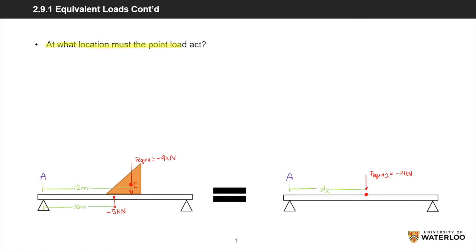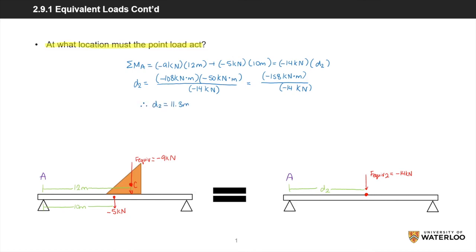Finally, we calculate the location at which the combined point load must act. Using conservation of momentum — a balance of moments equation — we add the moment produced by the DL about point A, which is negative 9 kN times 12 meters, with the moment produced by the beam weight about point A, which is negative 5 kN times 10 meters (half the beam length). Setting this equal to negative 14 kN times the unknown distance D2, and rearranging, we get an answer of 11.3 meters.